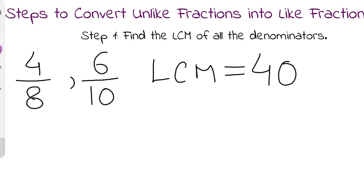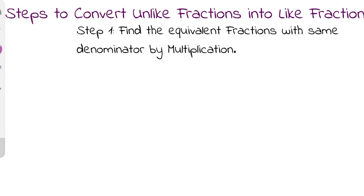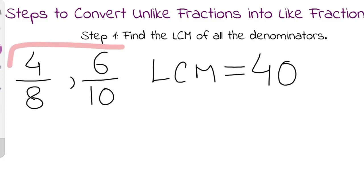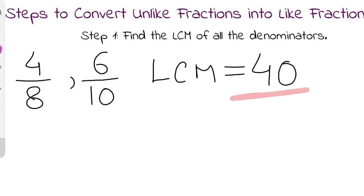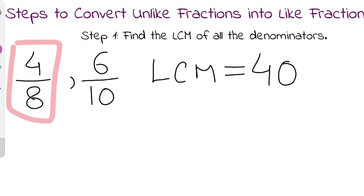The second step is to find the equivalent fractions with the same denominator by multiplication. We need to find equivalent fractions of these two fractions with the same denominator, that is 40. We will perform multiplication of the numerator and denominator with the same numbers. For 4/8, to make 8 into 40, we multiply by 5.